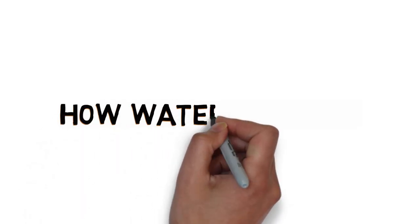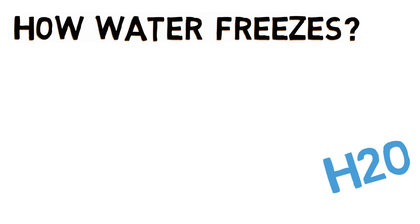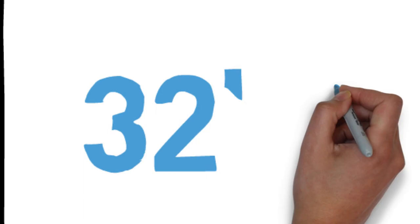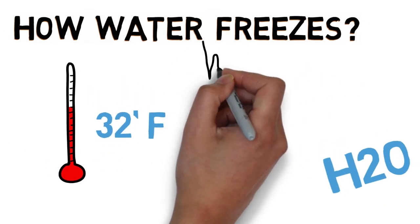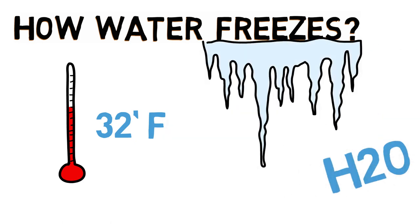First we need to know how water freezes. Water is made of tiny molecules, H2O, that move around a lot. As the temperature gets colder, the water molecules slow down. When the temperature falls to 32 degrees Fahrenheit, these slow-moving molecules find each other and start sticking together to form ice crystals. However,